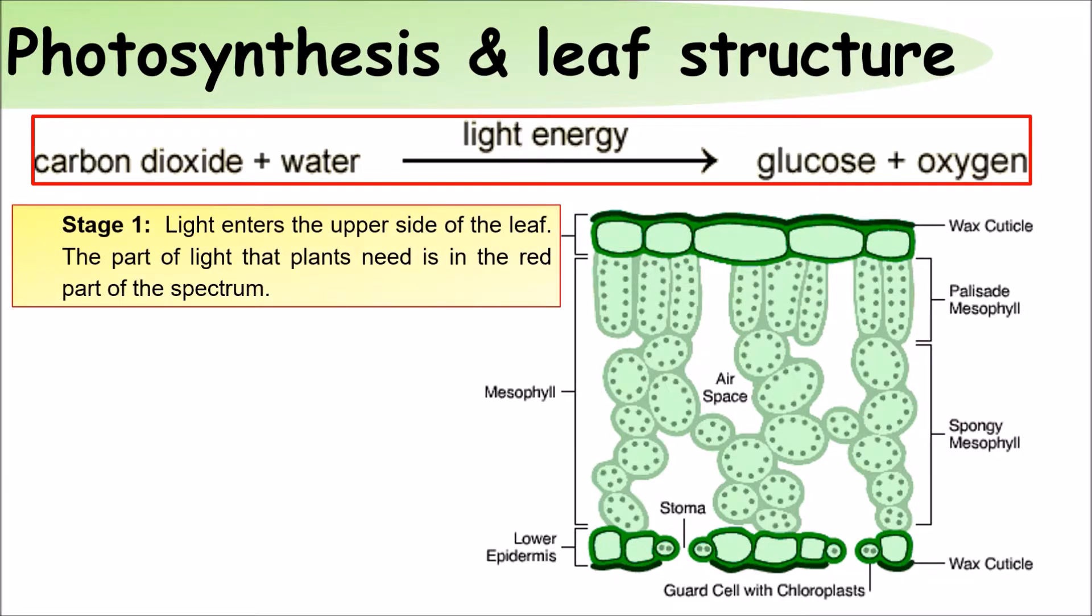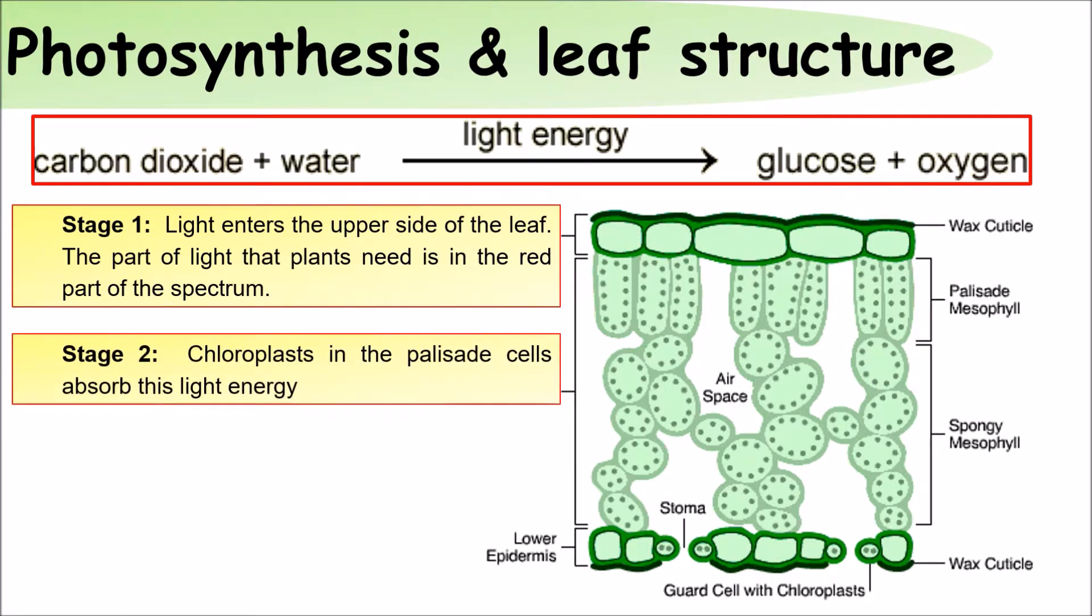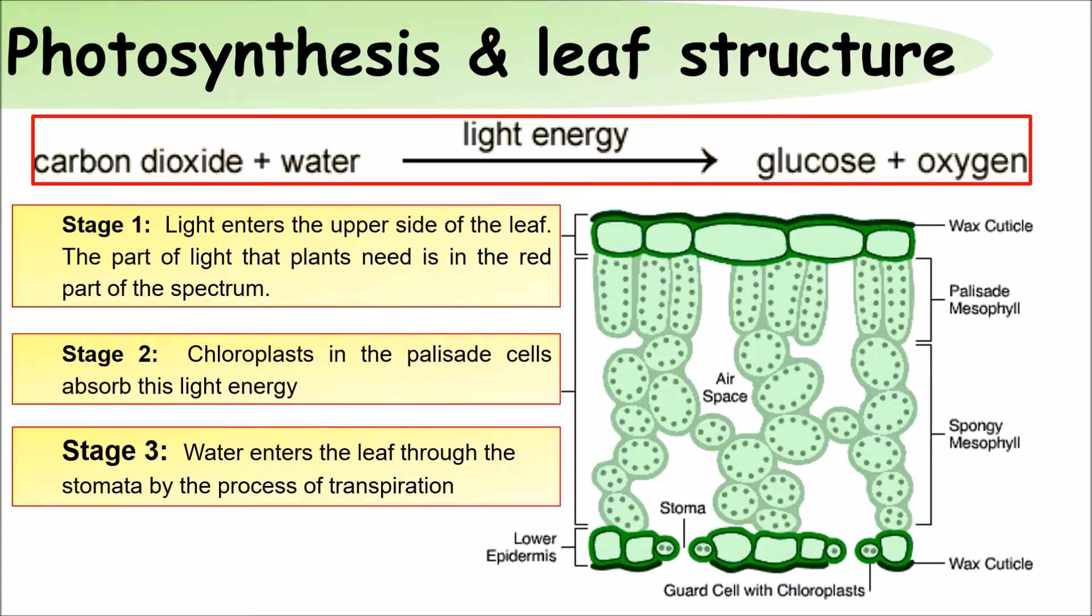Light enters the upper side of the leaf. The part of light that plants need is in the red end of the spectrum. Chloroplasts in the palisade cells absorb the light energy. Water enters the leaf through the stomata and is part of the transpiration cycle.